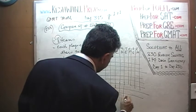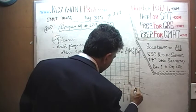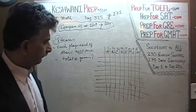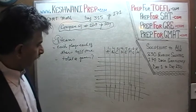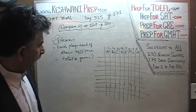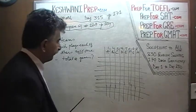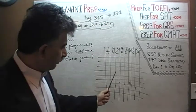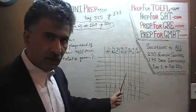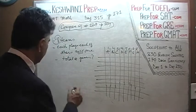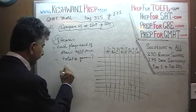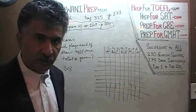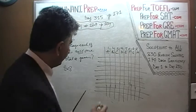We have 8 teams and the question is how many games are they going to play? Well, if we were to just count the boxes here, it's 8 times 8, obviously. There are 64 boxes, 64 entries.